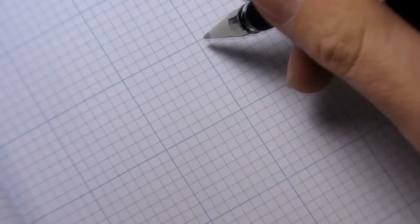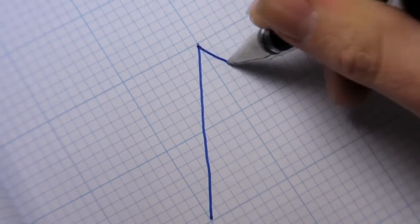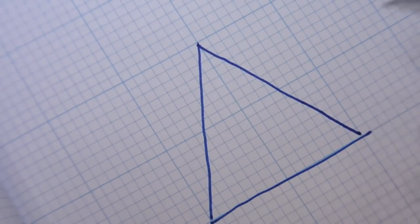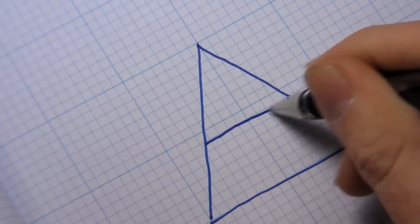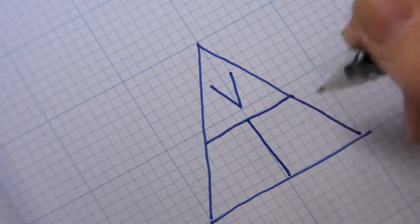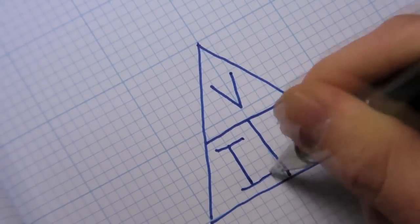So, like I said before, Ohm's law defines how those three properties relate to one another. Now to remember this relationship, we can use this pyramid diagram.